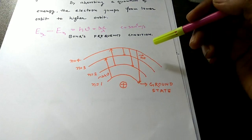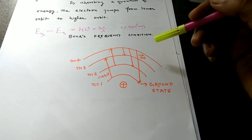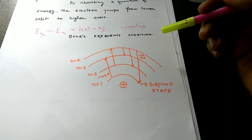So those are the three postulates of Bohr's atomic model. I hope you liked it — please mention if there is any problem in understanding, and I will try to improve myself. Share it with your friends so that they will also get benefited from this lecture. Thank you.